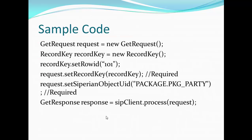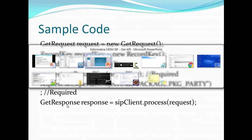Here is the sample code which can be used with the Get request. We create an instance of Get request using the new operator, which is Java convention. Then we create one more instance of Record Key. Inside the Record Key instance we set the row ID of the record we want to retrieve. We also set that record key inside the request using the set record key method. The request will contain either the package name or the base object name — here we set the package name as 'pkg_party'. Then on the MDM communication connection we call the process method by passing this request, and this will give us the Get response.